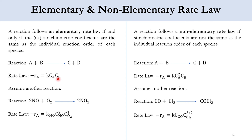On the opposite side, if you see CA raised to power 2 where the exponent is 2 but the stoichiometric coefficient is 1, that denotes a non-elementary rate law. A reaction follows a non-elementary rate law if the stoichiometric coefficients are not the same as the individual reaction order of each species.